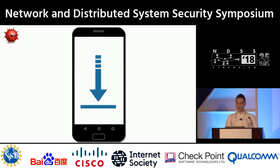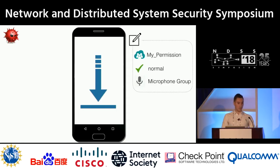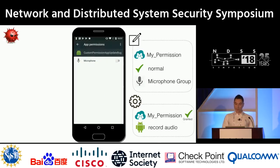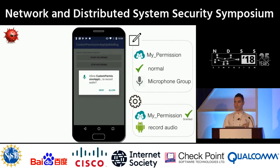Imagine, for example, installing an application which declares a custom permission with a protection level of normal and also assigns it to the microphone permission group. This application also requests this custom permission at runtime and also requests the dangerous system permission to record audio. At this point, the custom permission is automatically granted since it has a normal protection level, and the sensitive permission to record audio is not. So if the application is trying to use the sensitive API on the system, the user correctly will be consulted. So far, so good.